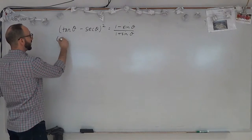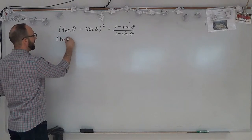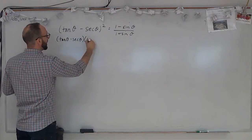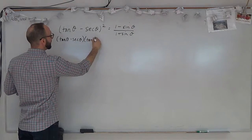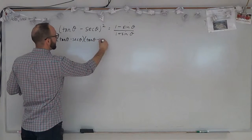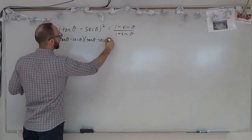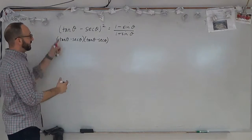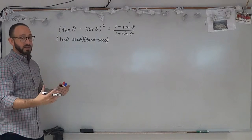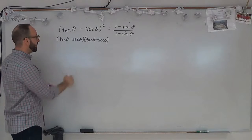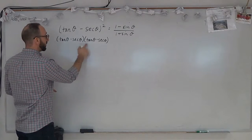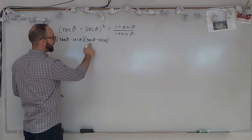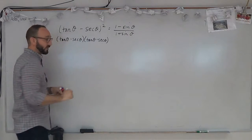We're going to multiply tan theta minus secant theta times tan theta minus secant theta, because tan theta minus secant theta, the quantity squared, equals tan theta minus secant theta times tan theta minus secant theta.